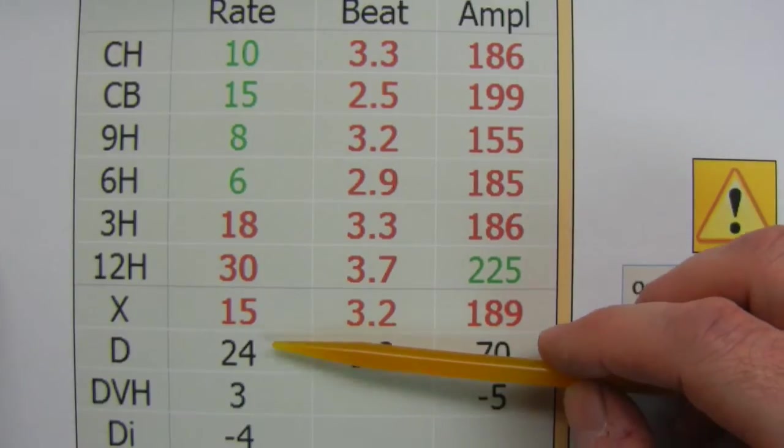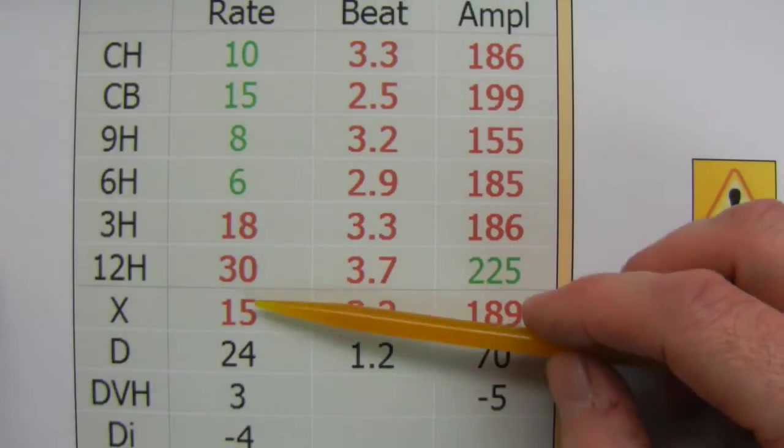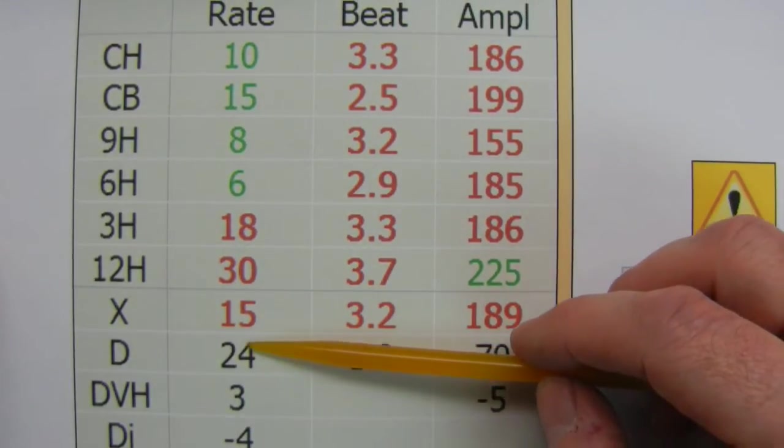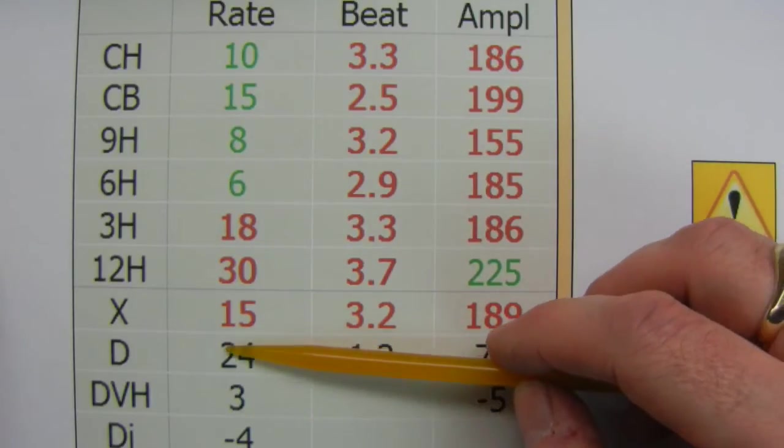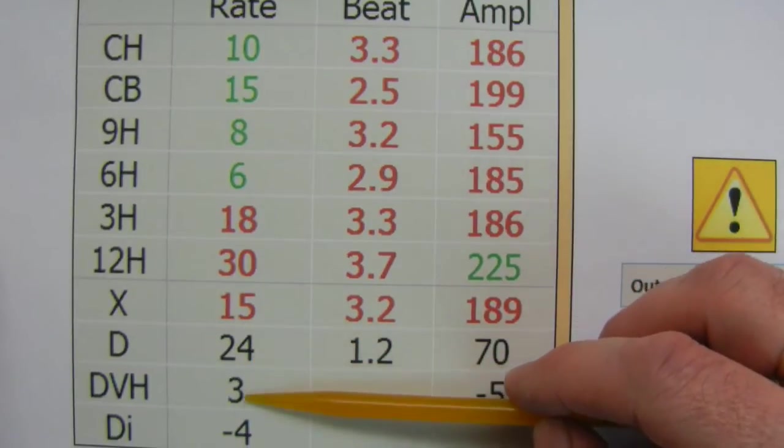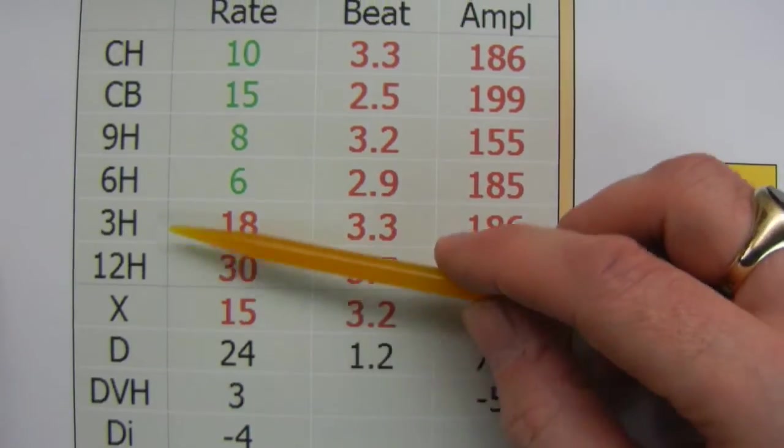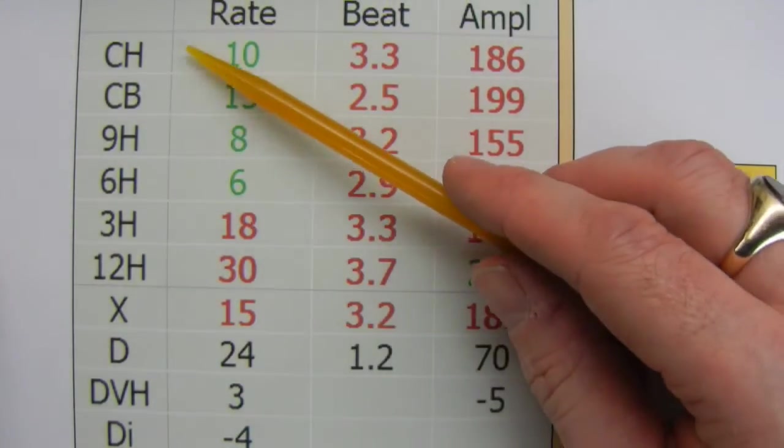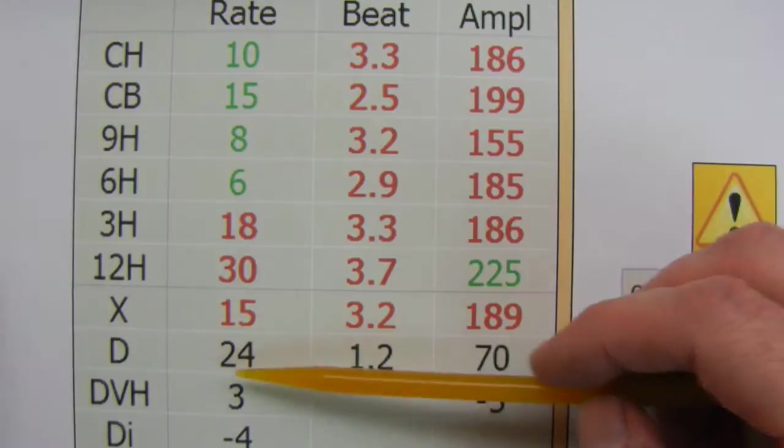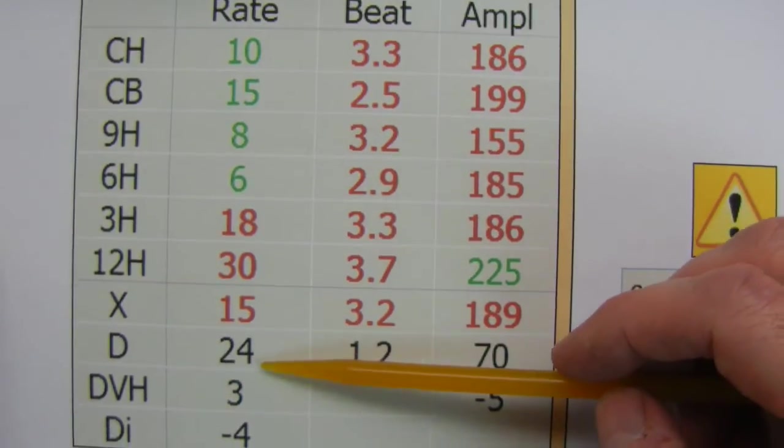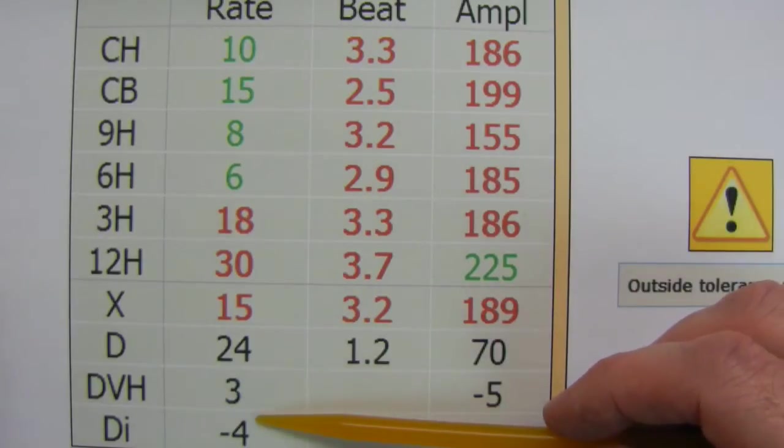This one, the delta, this is the difference between the highest and the lowest. And this is more interesting to a watchmaker who wants to get this value as small as possible.